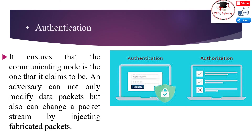Authentication ensures that the communicating node is the one it claims to be. An adversary cannot only modify data packets but can also inject fabricated packets into a packet stream. It is therefore essential for a receiver to verify that received packets have come from the actual sender. In communication between two nodes, data authentication can be achieved through a Message Authentication Code (MAC) computed from a shared secret key.